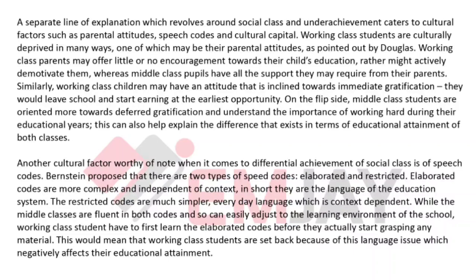Another cultural factor worthy of note when it comes to differential achievement of social class is speech codes. Bernstein proposed that there are two types of speech codes: elaborated and restricted. Elaborated codes are more complex and independent of context — in short, they are the language of the education system. Restricted codes are much simpler, everyday language which is context dependent. While the middle classes are fluent in both codes and can easily adjust to the learning environment of the school, working class students have to first learn the elaborated codes before they actually start grasping any material, setting them back and negatively affecting their educational attainment.